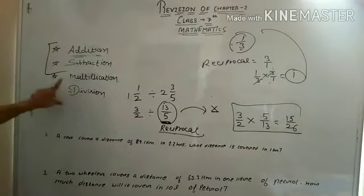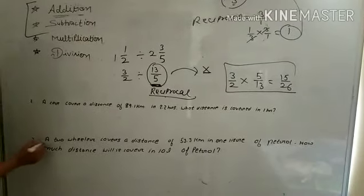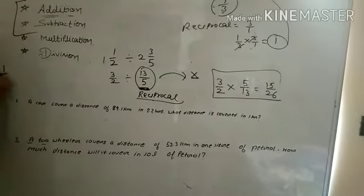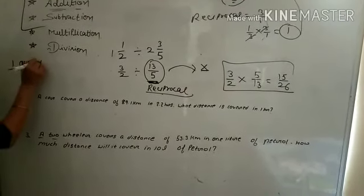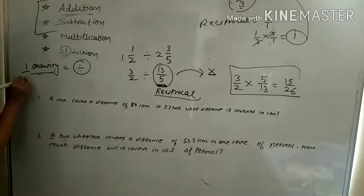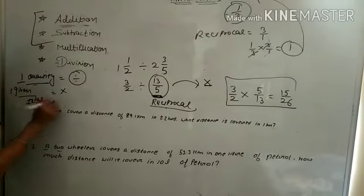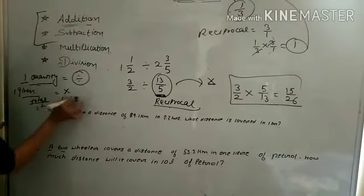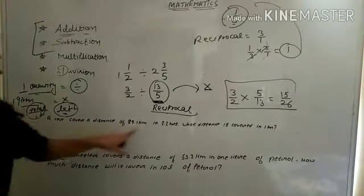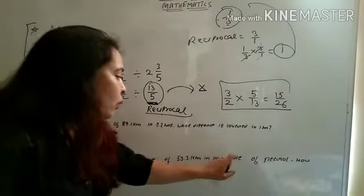These are the easy topics: addition, subtraction, multiplication, and division of fractions. Now let's come to statement sums. Most students have problems with statements, but these are very easy. The first question: a two-wheeler covers a distance of 53.3 km in one liter of petrol. The concept is simple: if one quantity is given and one quantity is asked, we divide. If one is given and we need to find another quantity, we multiply.